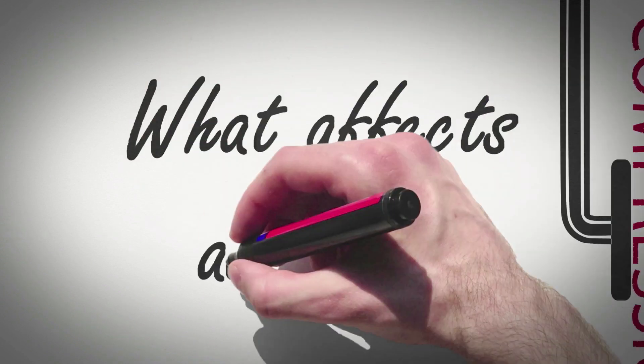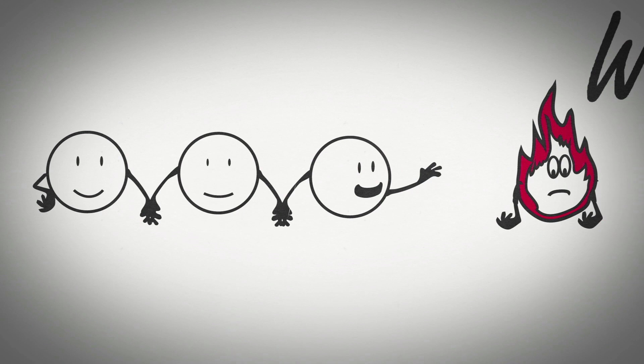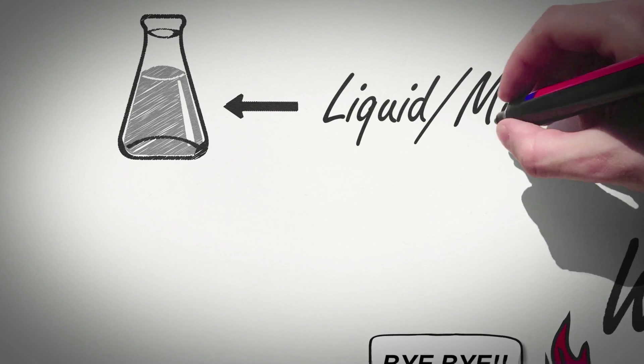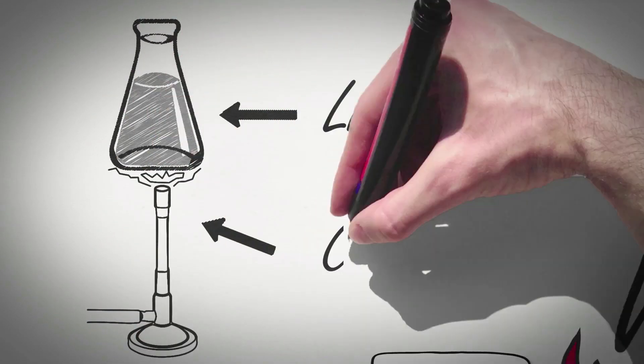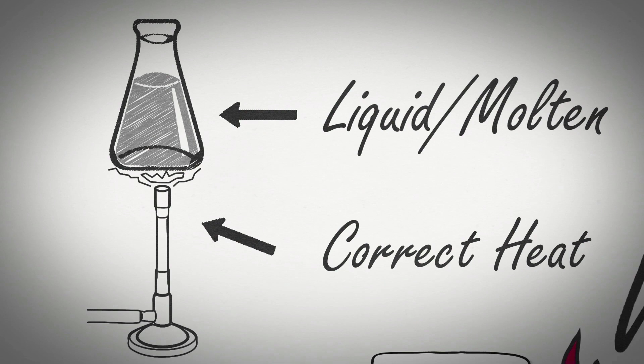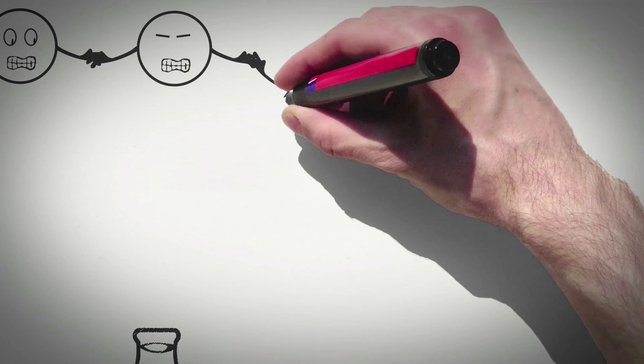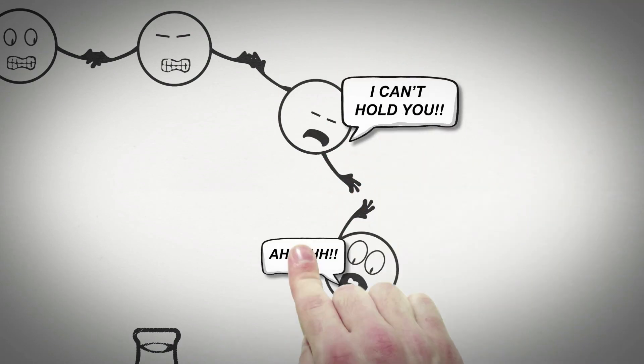What affects adhesion? As hot melt adhesives set by the loss of heat, the temperature at which they are applied is critical. It must be liquid or molten enough to wet out the substrates and be hot enough for assembly before cooling. If the adhesive is not hot enough in the molten stage, a bond may be made which will fail at a later stage, which is called a cold bond.